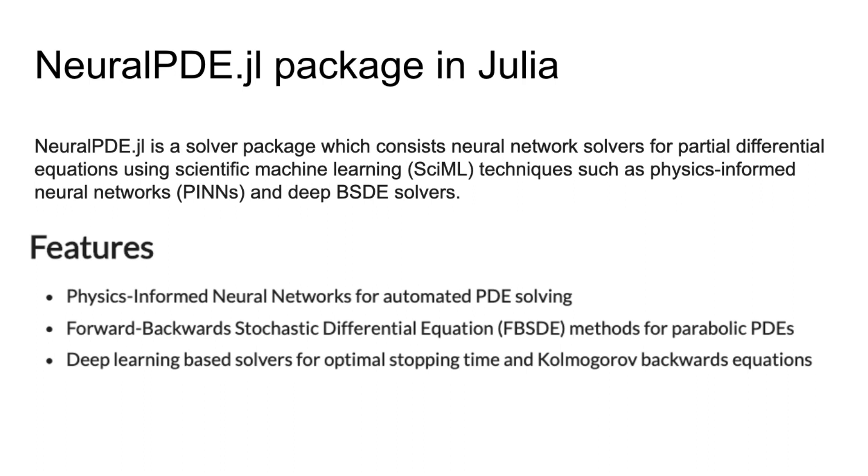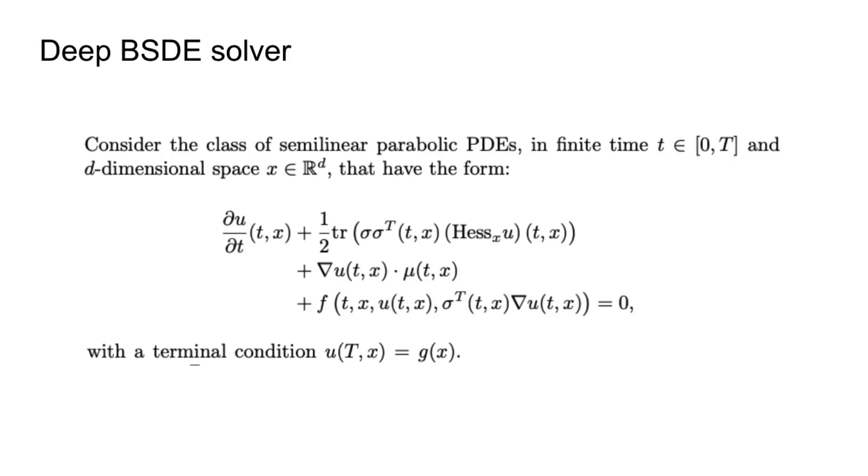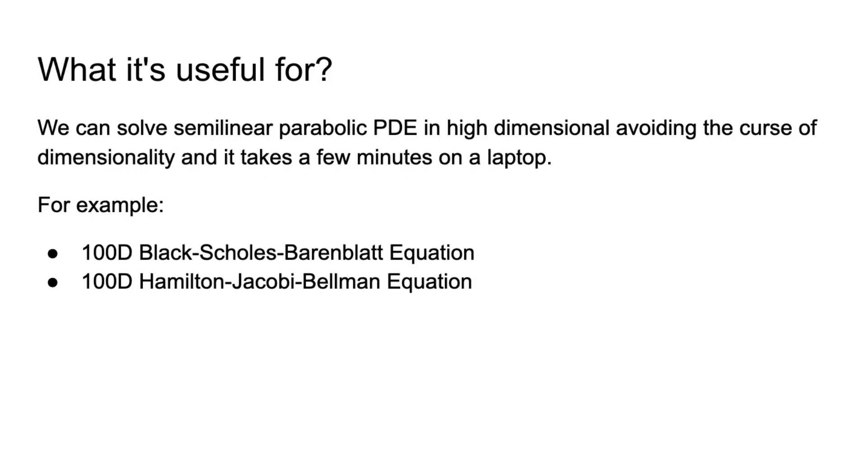NeuralPDE also has an optimal stopping problem and Kolmogorov backward equation solver, but today I will speak only about PINNs and deep BSDE. The deep BSDE solver is for semi-linear parabolic partial differential equations in the general form you can see on the slide, with some terminal condition, and we can solve this type of equation using our Julia implementation.